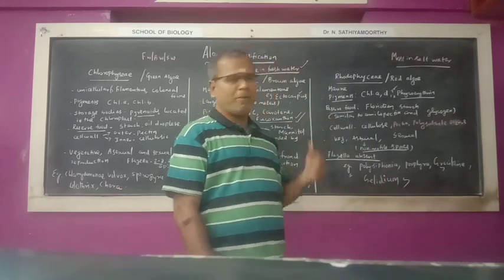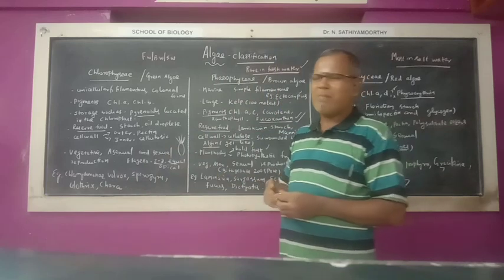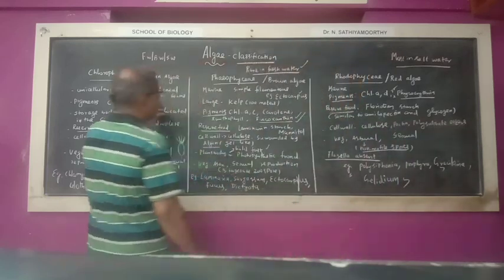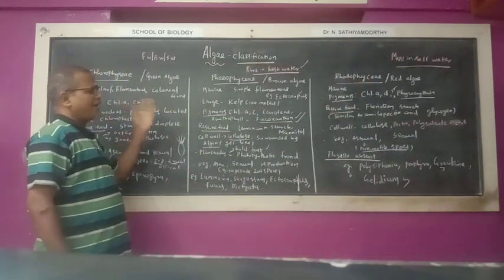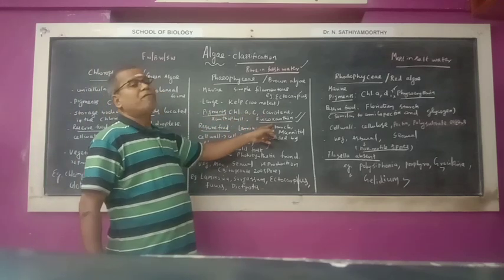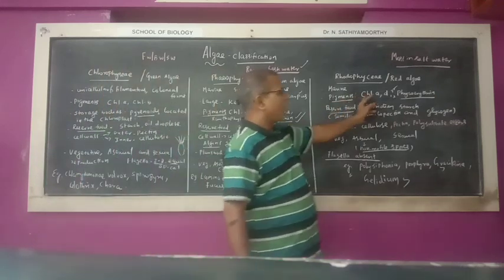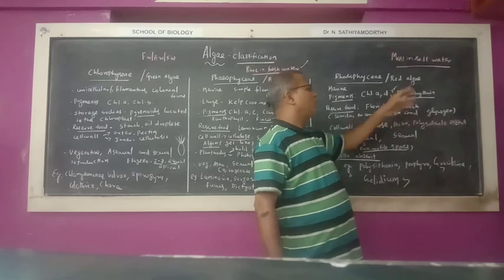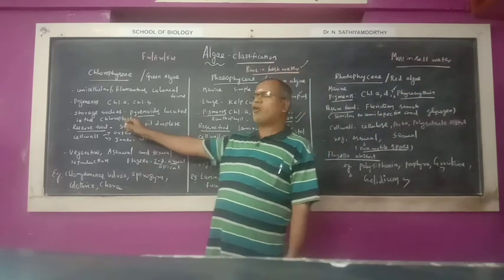It is important to know the pigments: Chlorophyll A and B is for Green Algae (Chlorophyceae). Chlorophyll A, C, xanthophyll, and Fucoxanthin is for Brown Algae (Phaeophyceae). Chlorophyll A and D with phycoerythrin is for Red Algae (Rhodophyceae). The reserve material is starch.